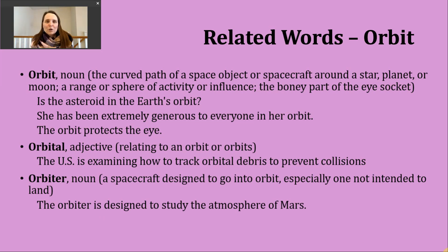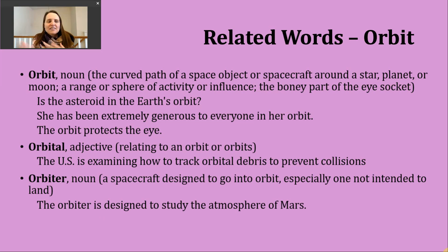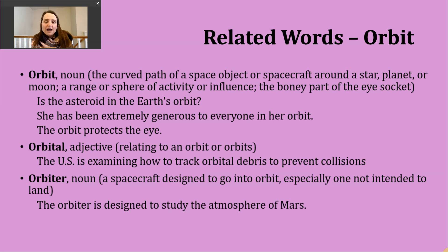Our last word is the noun orbiter, generally used to talk about a spacecraft designed to go into orbit — often satellites and things not necessarily meant to land on another planet. Example: the orbiter is designed to study the atmosphere of Mars. So this is some kind of spacecraft traveling through space into Mars's atmosphere, with the idea that it's not trying to land on the planet.